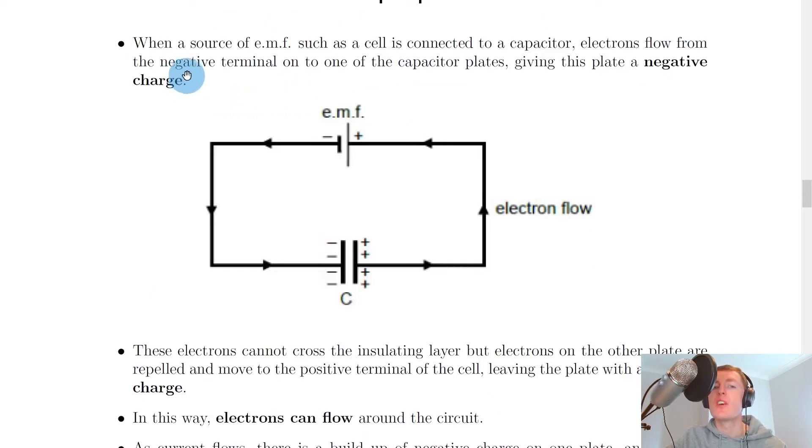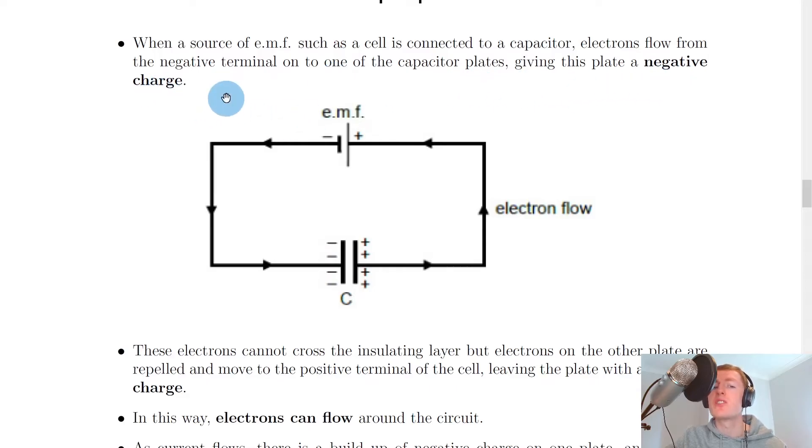When a source of EMF, such as a cell, is connected to a capacitor, electrons flow from the negative terminal of the cell or battery onto one of the capacitor plates, giving this plate a negative charge. If we look at this circuit diagram, we've got the battery source, the EMF here, and the negative terminal and positive terminal of the battery. Remember that electrons will flow from the negative terminal of the battery round to the positive terminal of the battery.